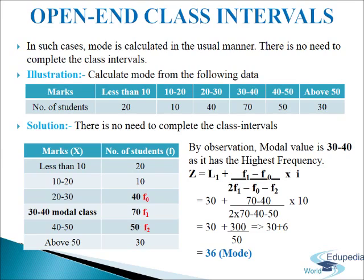Let us understand this with the help of a following illustration. We have to calculate mode from data where marks and number of students are given. In the question, the first class is written as 'less than 10' and the last class interval is written as 'above 50'. So there is no need to complete the class intervals. We make a table of two columns: marks (X) and number of students (F), and write the class intervals and frequencies as given. By inspection method, the highest frequency is 70, which is in the modal class of 30 to 40.